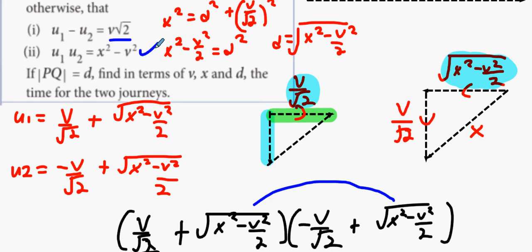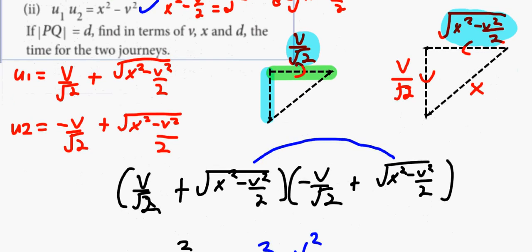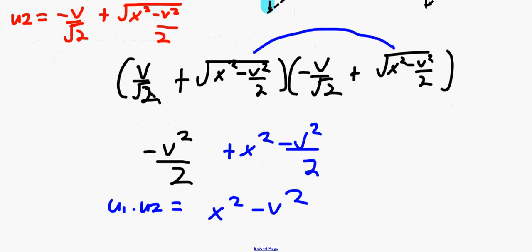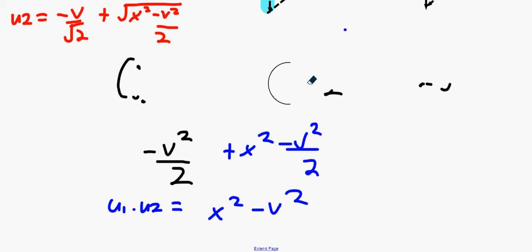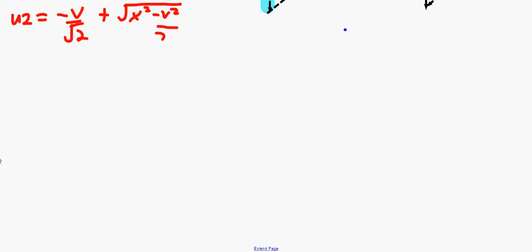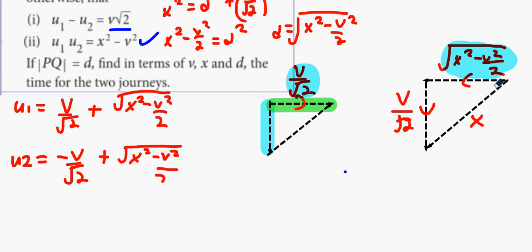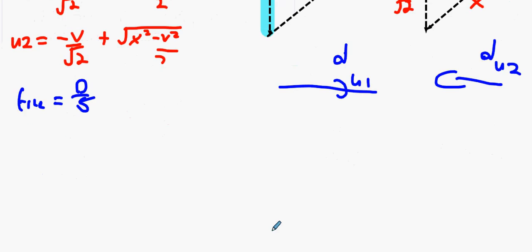If PQ is the distance d, find in terms of V, x, and d the time for the two journeys. On the way there, we travel the distance d at u1. On the way back, we travel the distance d at speed u2. Time equals distance over speed. This implies that we're doing d over u1 is the time on the way there. d over u2 is the time on the way back.